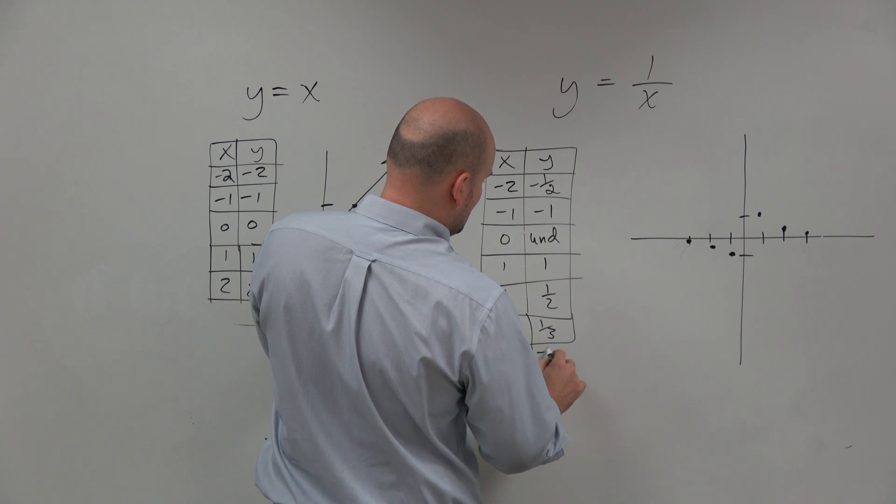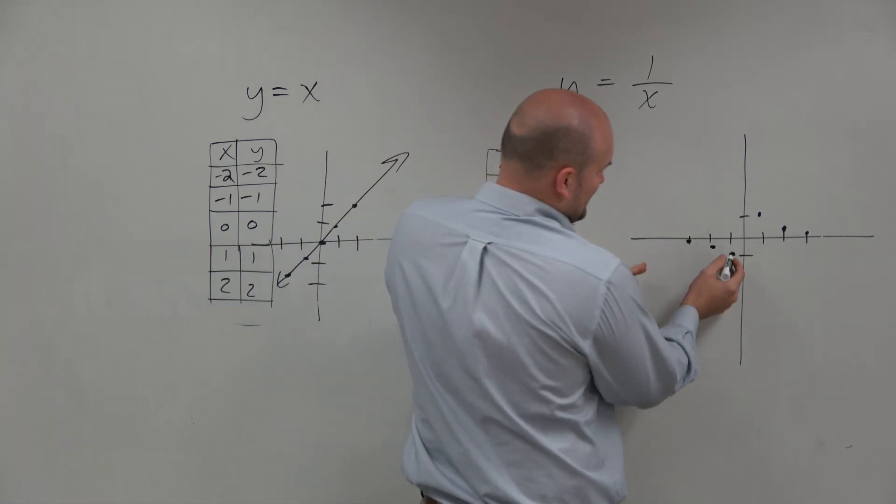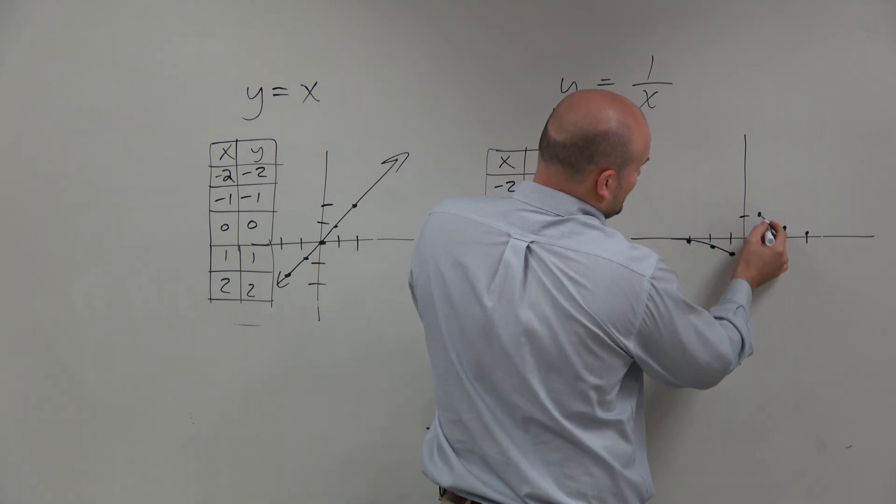At negative 3, it would be coming into negative 1/3. So if we did negative 3, that's going to be negative 1/3. So we see here it's going this way, and here it's going that way.